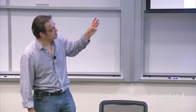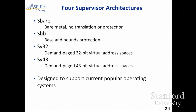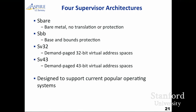Currently the privilege spec defines four supervisor environments, and the goal is really to support current popular OSes. There's a bare metal mode with no translation, a base-and-bounds mode, then two demand-paging modes: 32-bit virtual address space, and 43-bit virtual address space for 64-bit systems. These are very conventional page systems, deliberately so — just to bring current OSes up as guest OSes. Q: Is virtual memory an architectural thing? The OS manages page tables, but doesn't see TLBs or do TLB flushes — it has instead a fence on memory management state (fence.mm), meaning from the next instruction you'll see the effect of any writes to the page table structure.